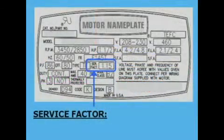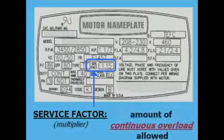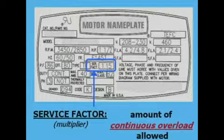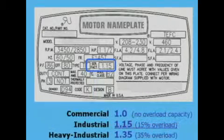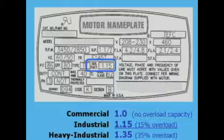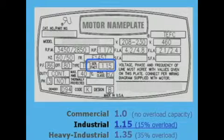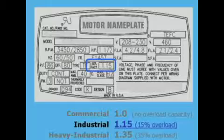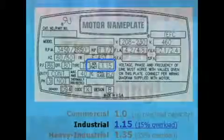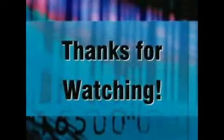Service factor is different. It refers to design margin built into a motor — specifically, how much a motor can be overloaded without overheating. Less expensive commercial grade motors are often rated 1.0 with no overload capacity. Industrial motors cost slightly more but are usually rated 1.15, meaning they're able to deliver 15% more than rated horsepower indefinitely.